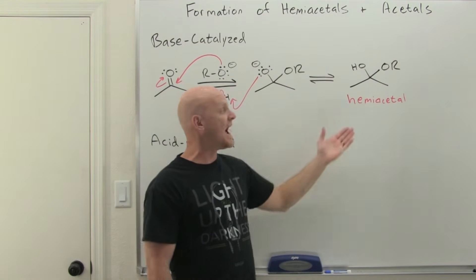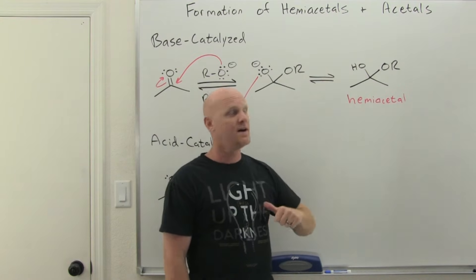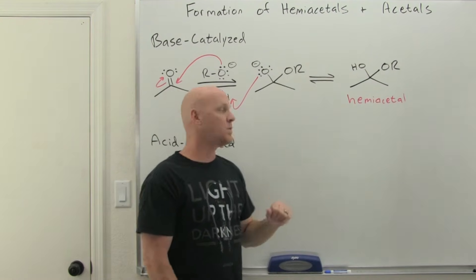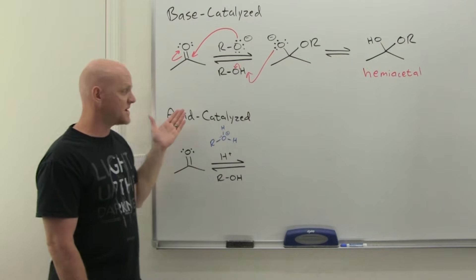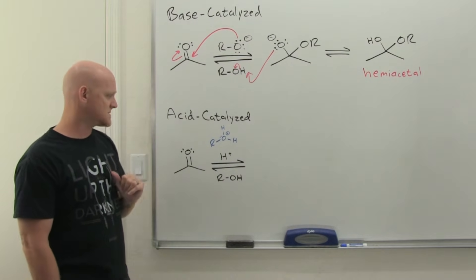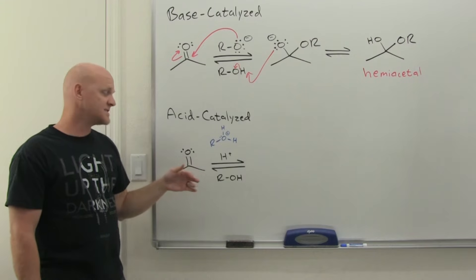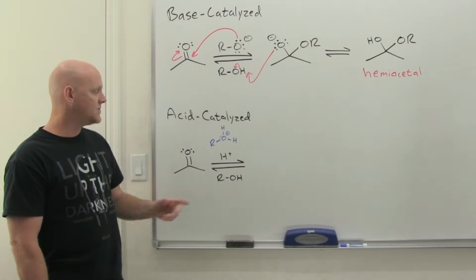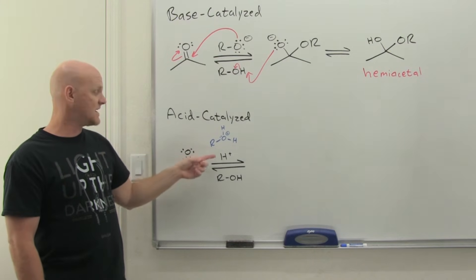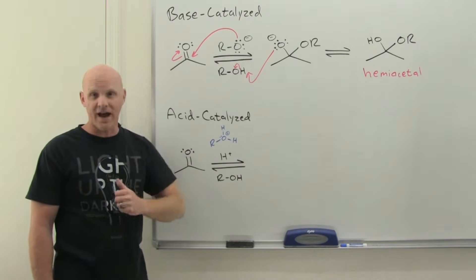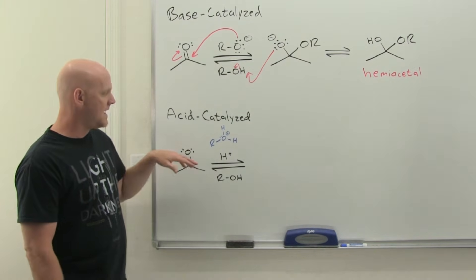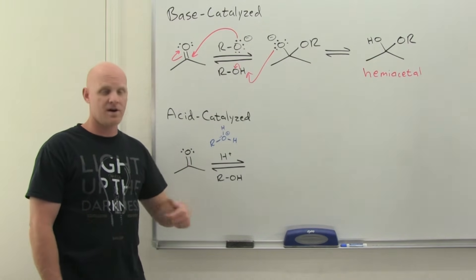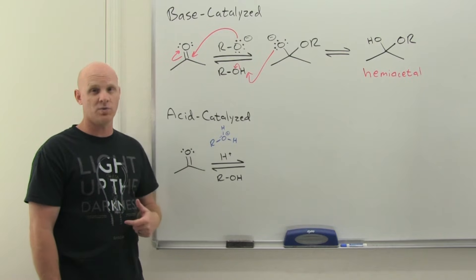"Hemi" means halfway, and that's a very fitting name because we're halfway to forming an acetal. Under base-catalyzed conditions, this is as far as you can go. However, we can continue on under acid-catalyzed conditions. To run the reaction under acid catalysis, instead of adding an alkoxide base, you add an acid — generically H⁺, though sulfuric acid is common. Just as sulfuric acid dissociates completely in water to form H₃O⁺, here it dissociates completely in our alcohol to form a protonated alcohol.